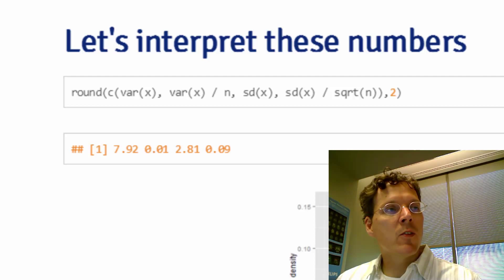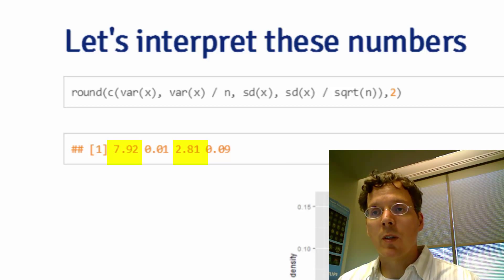So 7.92 and 2.81, the variance of x and the standard deviation of x, are simply talking about the variability in son's heights from this data set, which are estimates of the variability, the population variability of son's heights, if you're willing to assume that these sons are a random sample from some meaningful population.